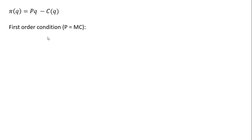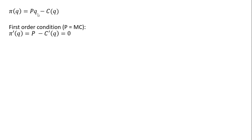The first order condition we're going to find is that the competitive firm maximizes profit where price equals marginal cost. We're going to take the derivative of the profit function with respect to Q and set that result equal to zero. Taking the derivative, we get P — the derivative of P times Q is P — and the derivative of the cost function with respect to quantity is given by this notation, C prime as a function of Q.